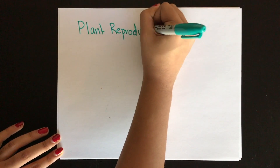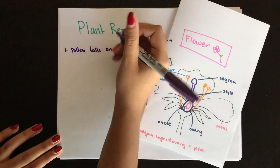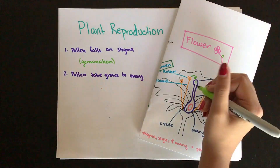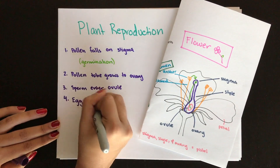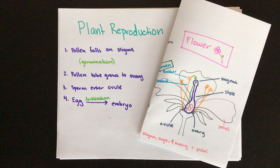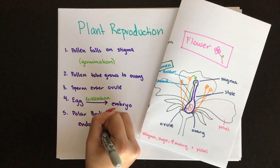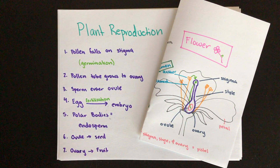Now we're going to talk about the steps of plant reproduction. First, pollen falls on the sticky stigma. The pollen then germinates and a pollen tube grows down the style to connect to the ovary. Two sperm from the pollen travel down the pollen tube and enter the ovule where they undergo double fertilization — one sperm fertilizes the egg and the other fuses with the polar bodies. The fertilized egg is now called a plant embryo and the polar bodies become food-storing tissue. The ovule develops into a seed and the ovary into a fruit. The seed eventually develops into a new plant and the cycle begins again.